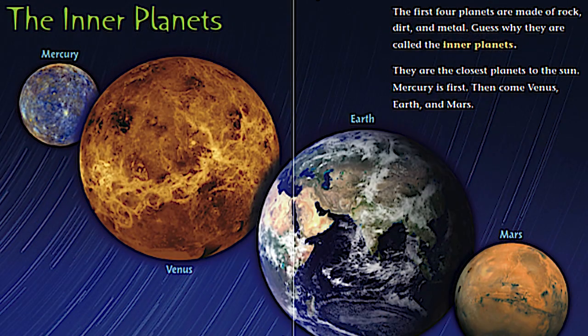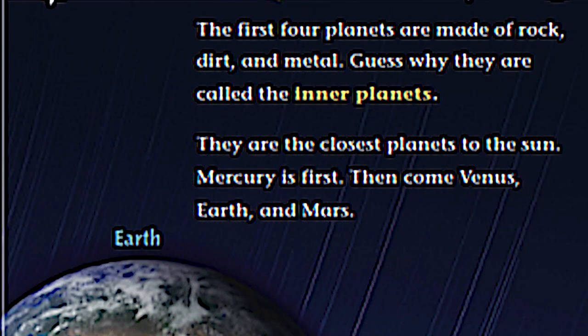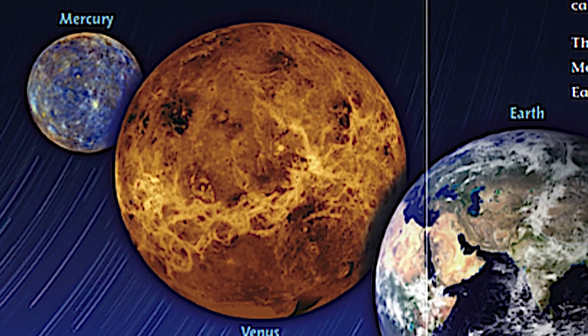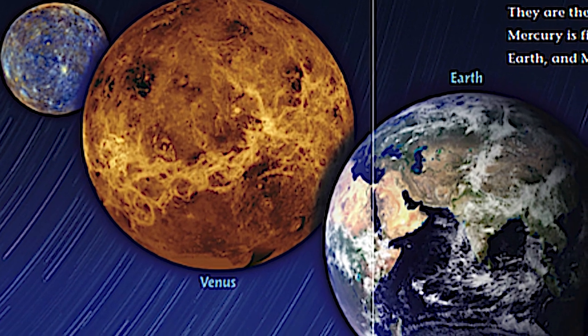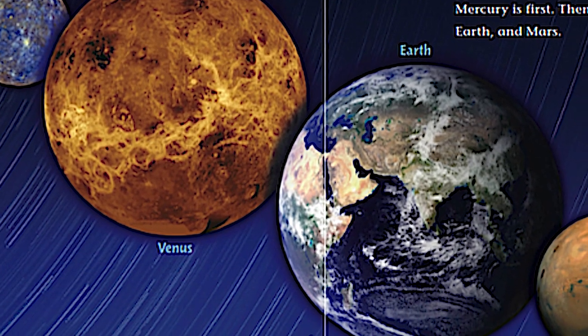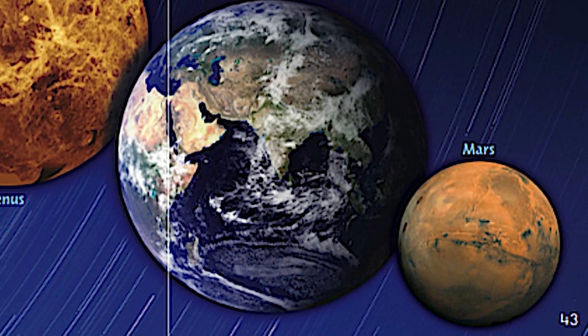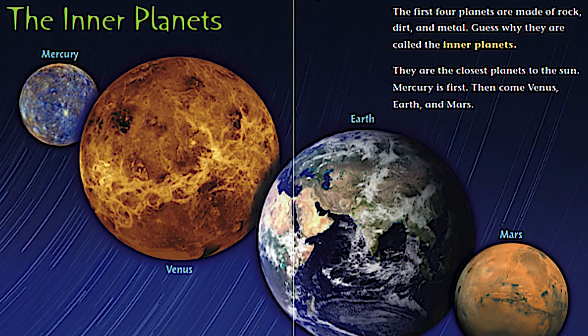Take a look at this page. We have a new title, a new heading. It's called the inner planets. What does the word inner mean? Let's see if we could find out. The first four planets are made of rock, dirt, and metal. Guess why they are called the inner planets? They are the closest planets to the sun. That's why they're called inner planets. Mercury is first. Can you point to Mercury? Then comes Venus, much bigger than Mercury. Can you point to Venus? And then there we are right after Earth. Point to Earth. And after Earth is Mars. Point to Mars. Those are the four inner planets closest to the sun.